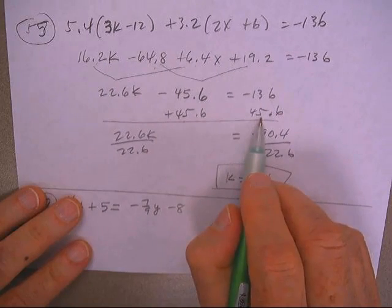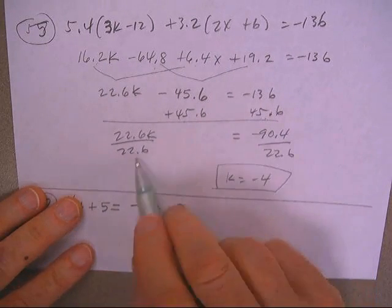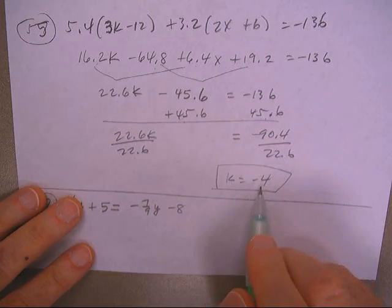You can do this by hand if you want to. Add 45.6 to both sides. Divide by 22.6. And you'll come out with this.